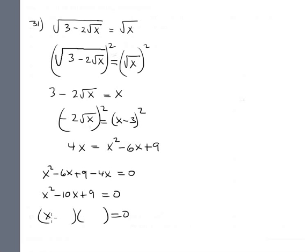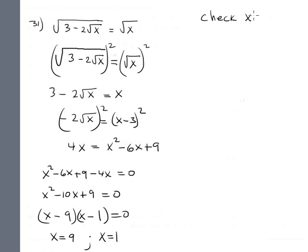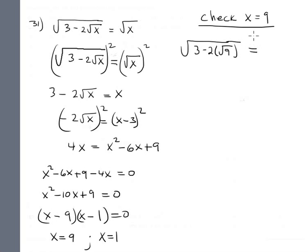Factoring: the combination is 9 and 1, giving (x minus 9)(x minus 1) equals 0, so the solutions are x equals 9 and x equals 1.